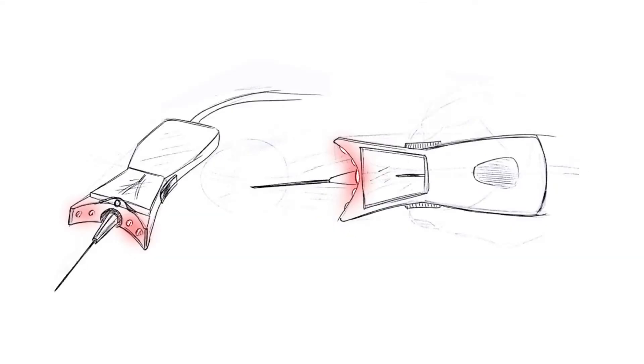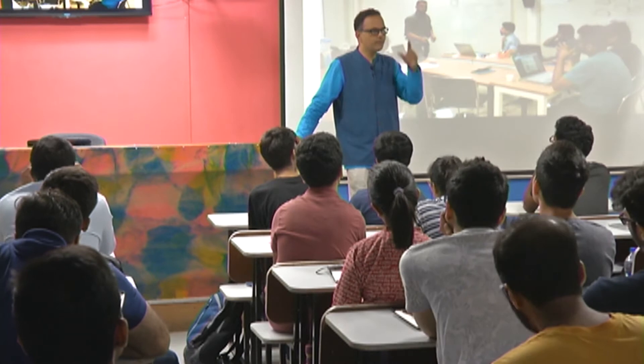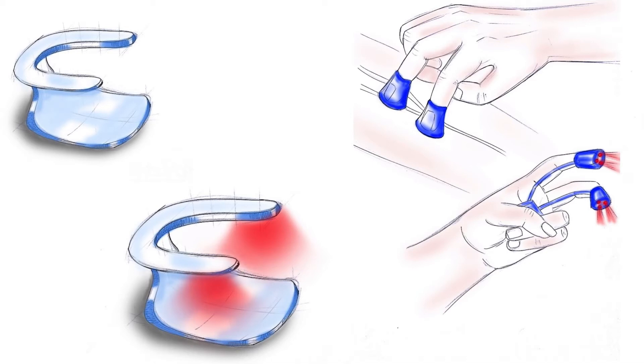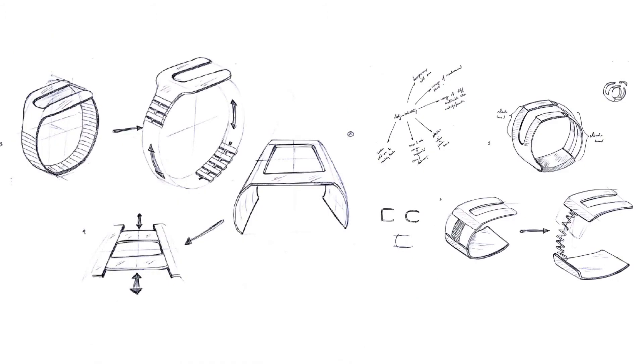First, he said he would like to have the infrared light on the syringe itself. Then he said no, that is not going to work because it has to come in close contact with the skin so that the light can enter inside. So he said put the infrared LEDs on the skin so that your veins can be seen through the skin, and then take all the ideas together and develop concepts.